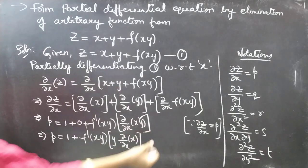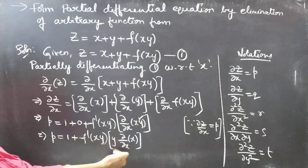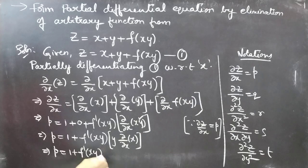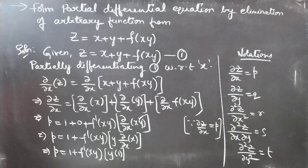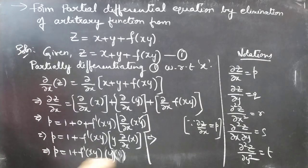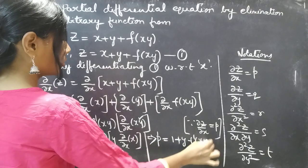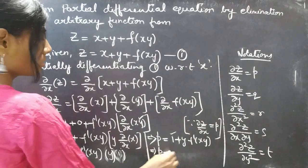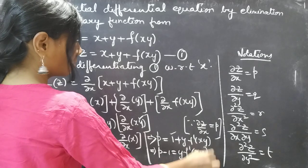This gives us p = 1 + f'(xy). Here y is a constant, so we can write this as y · ∂/∂x of x, because xy is in product form — we can take y as constant outside the derivative. This gives us p = 1 + f'(xy) · y · 1, that is p = 1 + y·f'(xy). Now bring the 1 to the LHS: p − 1 = y·f'(xy). Consider this as equation number 2.